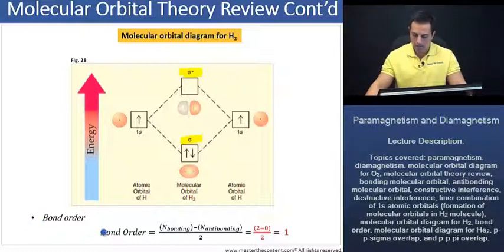For our hydrogen molecule here, we said all we're going to need to do is take the number of bonding electrons, which is going to be two, minus the number of antibonding electrons, which is going to be zero. And we see here that our bond order is going to be one.